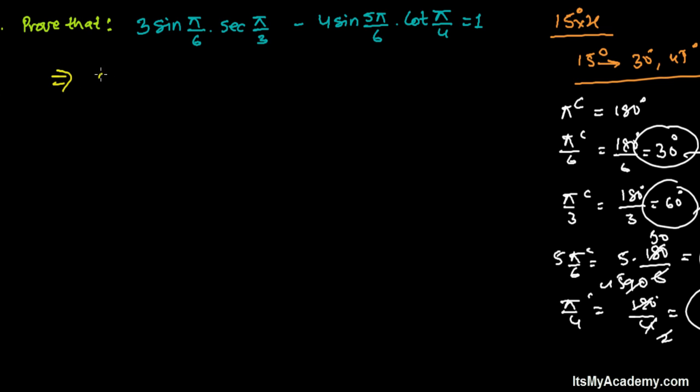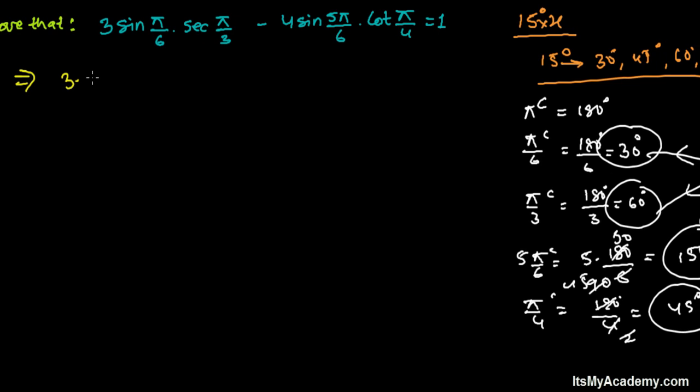I'm just going to solve it. It's 3 times sine pi by 6. Sine pi by 6 means - I recently told you pi by 6 is 30 degrees - so sine 30 degrees is 1 over 2. And secant of pi by 3, that is 60 degrees.